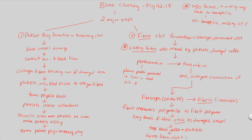A fibrin clot is much stronger and more stable than a platelet plug, making it a more permanent clot that really prevents bleeding from occurring. The platelet plug was just a temporary measure to allow this more complex process — involving more enzymes and reactions — the time it needed to complete itself.